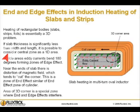If slab thickness is significantly less than width and length, it is possible to consider the central zone as a 1D area.